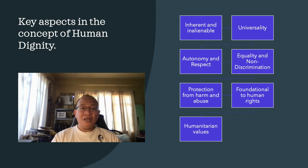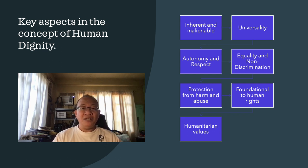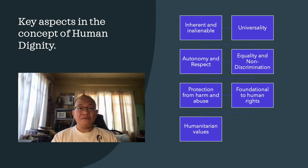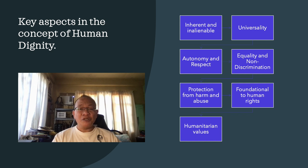Number three is autonomy and respect. Human dignity encompasses the idea of autonomy and self-worth, emphasizing the importance of respecting individuals' choices, agency, and integrity. It requires that individuals be treated with respect, fairness, and consideration for their inherent worth as human beings. Number four is equality and non-discrimination. Human dignity entails the principle of equality, emphasizing the equal worth and value of every person. It prohibits discrimination and ensures that all individuals are entitled to the same rights, opportunities, and protections without prejudice or bias.